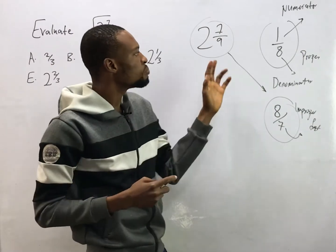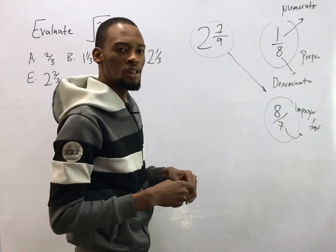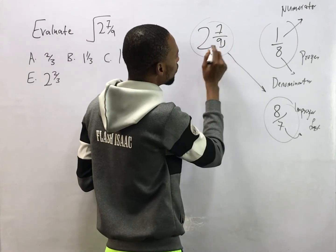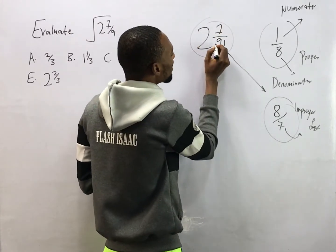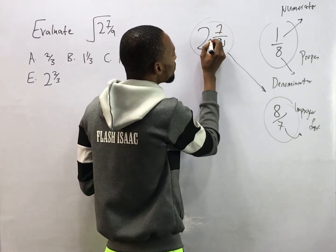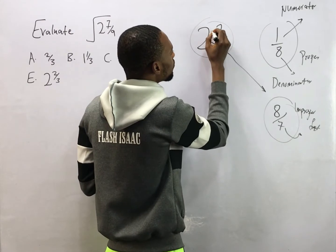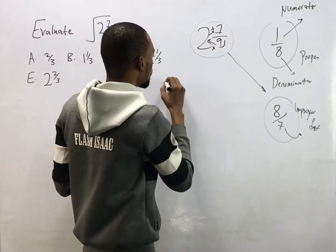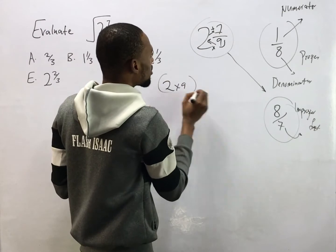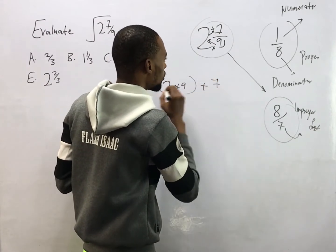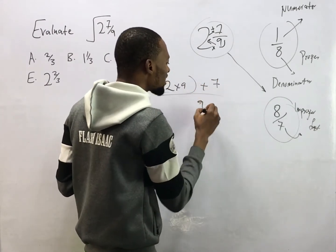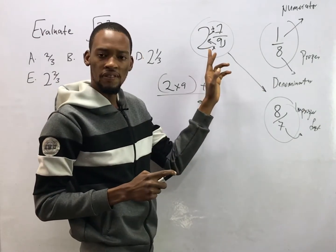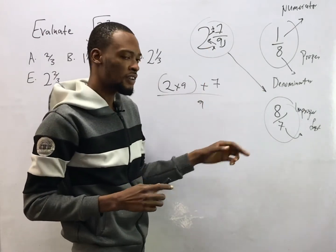How do you convert a mixed fraction to an improper fraction? You look at what is at the bottom, and what is at the top. You multiply the denominator by the whole number, then add the numerator. So in this case we have 2 times 9, plus 7, over 9. That's how you convert a mixed fraction to an improper fraction.